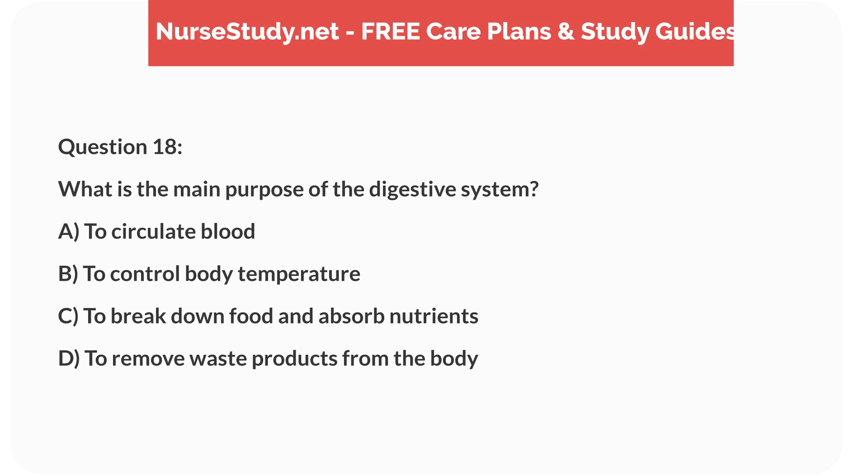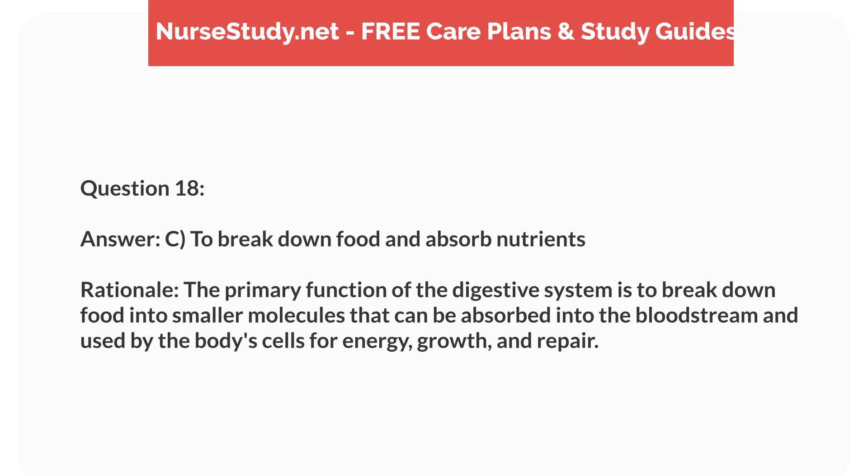Question 18: What is the main purpose of the digestive system? A) to circulate blood, B) to control body temperature, C) to break down food and absorb nutrients, D) to remove waste products from the body. Answer: C, to break down food and absorb nutrients. Rationale: The primary function of the digestive system is to break down food into smaller molecules that can be absorbed into the bloodstream and used by the body's cells for energy, growth, and repair.